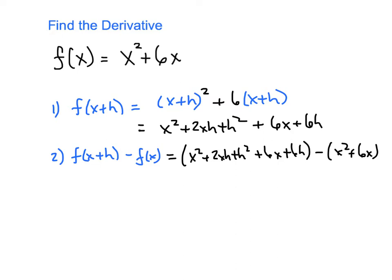And remember we're going to distribute this negative sign. So those are both negative and basically they just cancel off the x squared and the 6x. So the difference then equals 2xh plus h squared plus 6h. That's all that's left because these guys also cancelled off.